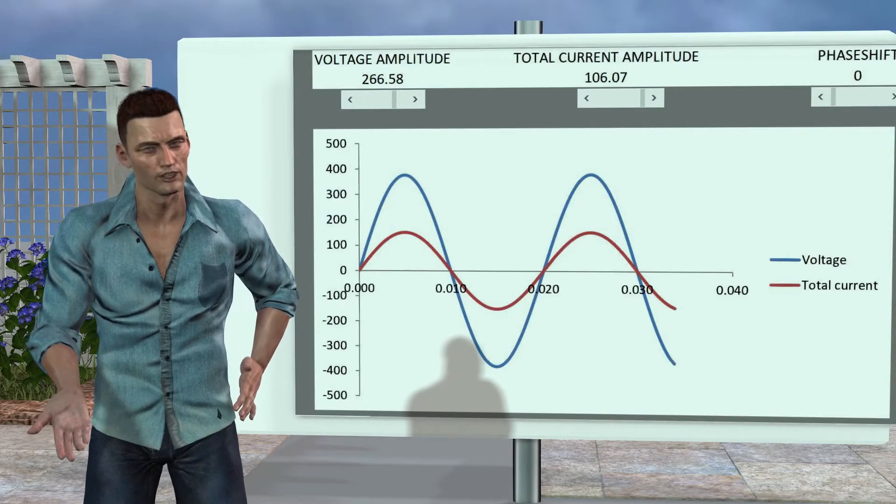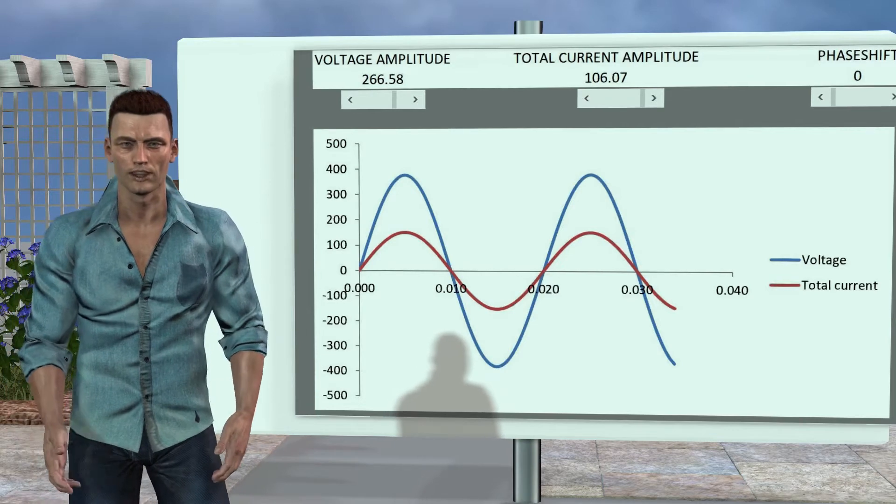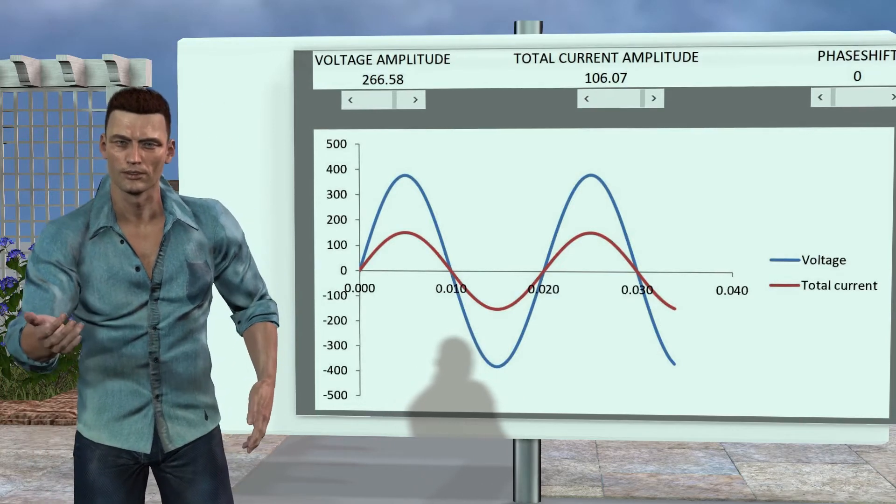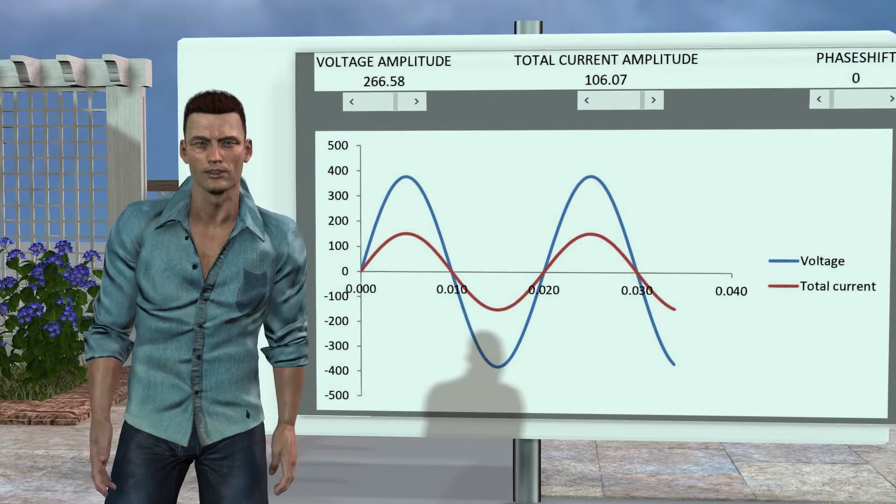Let us first consider a resistance type load. In this case, the voltage and current waveforms are in phase, that is, the zero crossings and maximum values of the voltage and current waveforms coincide in time.